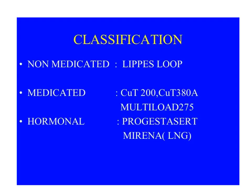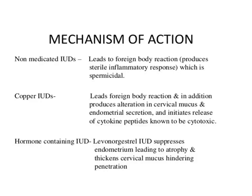Non-medicated loops such as the Lippes loop cause a foreign body reaction producing a sterile inflammatory response which is spermicidal. Copper IUDs also cause a foreign body reaction and induce alterations in cervical mucus — making it thicker and less elastic — and initiate release of cytokine peptides which may be cytotoxic. Hormonal IUDs like Progestasert suppress the endometrium leading to atrophy, so the endometrium is not prepared to receive the zygote, and they also thicken the cervical mucus.